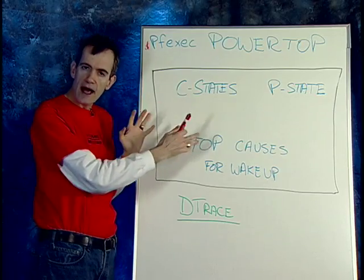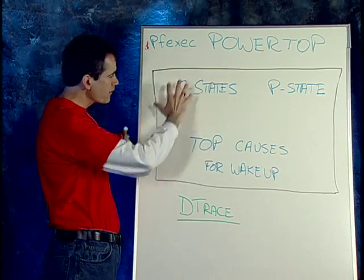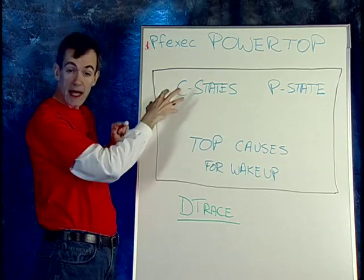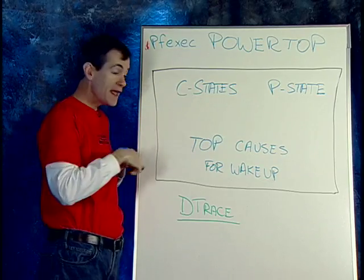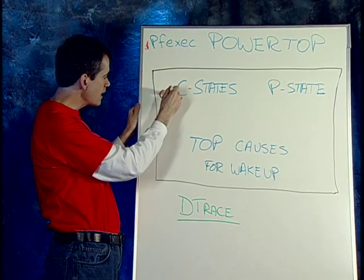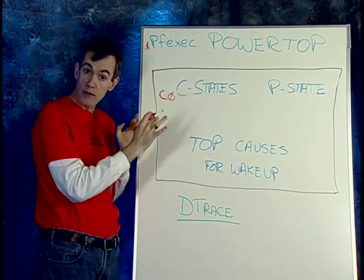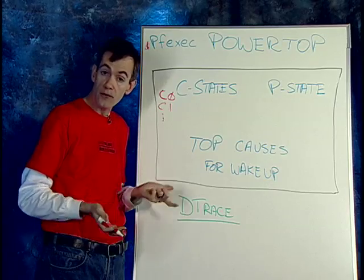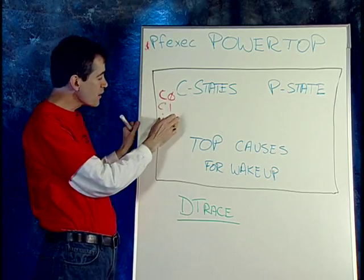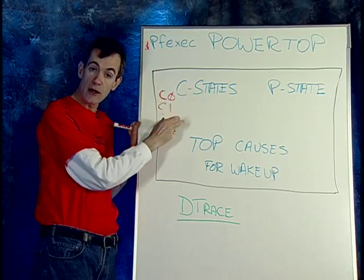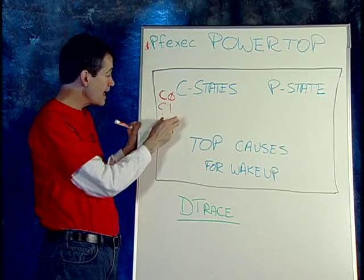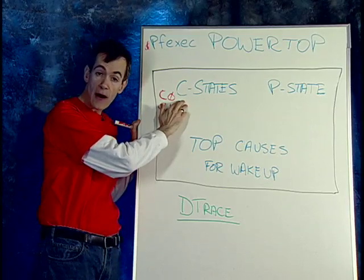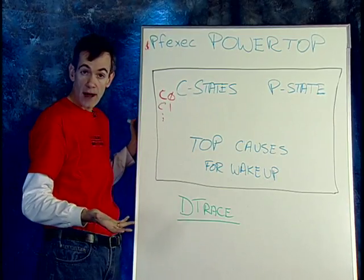Let me give you an idea of how to interpret this. This part of the display is really about idle power — we're showing how much time we're spending in each of the C states. C0, of course, is when we're not idle and we use full power. If you've got C1 or even lower C states, if you're idle, you want to spend the most time possible in a low C state. Any time spent in C0 when you should be completely idle is really wasted power, wasted battery life, wasted data center power.